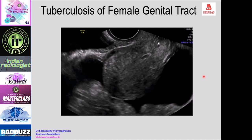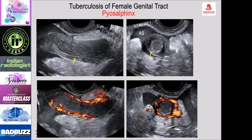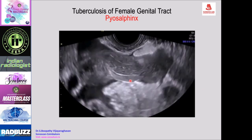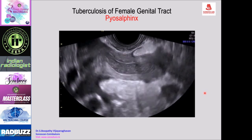In tuberculosis pyosalpinx, the markedly thickened fallopian tube is seen with adjacent ascites. In cross-section, the tube shows marked thickening with internal distension and debris. Color Doppler shows intense hyperemia of the walls. The patient does not have acute symptoms. Real-time dynamic scan shows movement of debris in the fallopian tube confirming pyosalpinx.